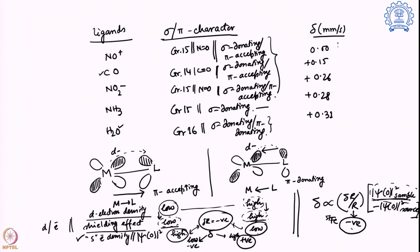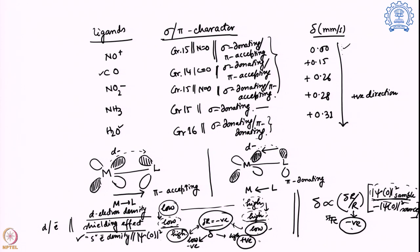Looking at the values, we move from 0 to +0.31 in the positive direction. This is because of the pi interacting properties of the ligands. When a ligand is pi accepting, it removes d-electron density from the metal — leading to less shielding — so S-electrons can reach the nucleus and psi(0)² is high. Multiplied by the negative delta R, the delta value is on the lower side. When it is pi donating, a lot of electron density comes into d-orbitals, creating strong shielding, low S-electron density at the nucleus, and a more positive delta value.